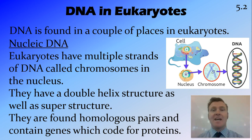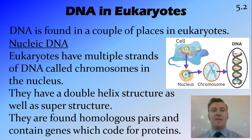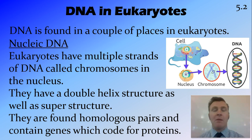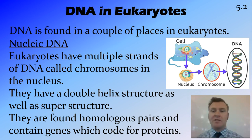The DNA contains genes — sections of DNA on those chromosomes that code for proteins. That's the main thing that DNA does: it codes for proteins, and those proteins are how our genetic traits are expressed. Whether that's a protein that produces a blue eye pigment or a brown eye pigment, that's how those genetic traits are expressed.